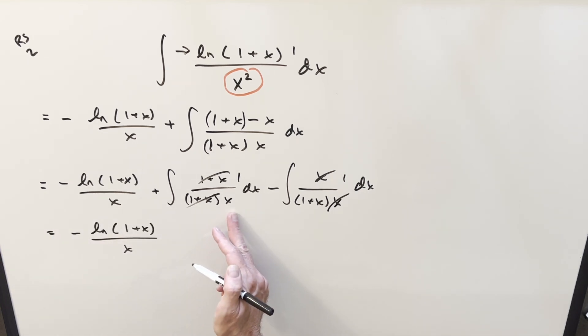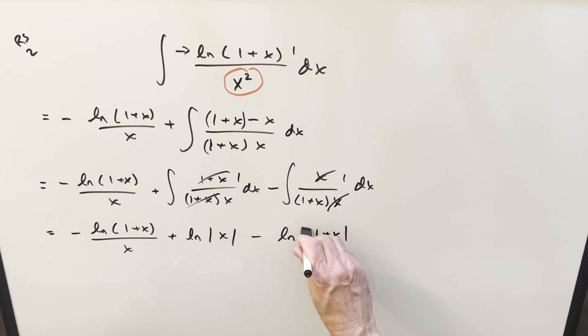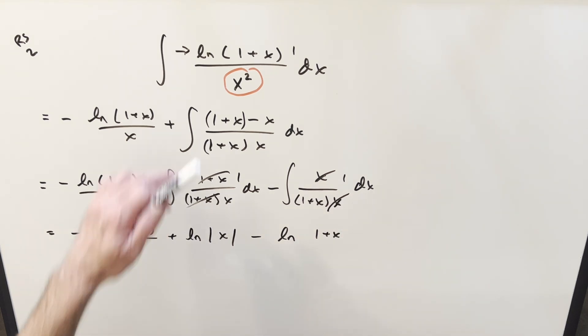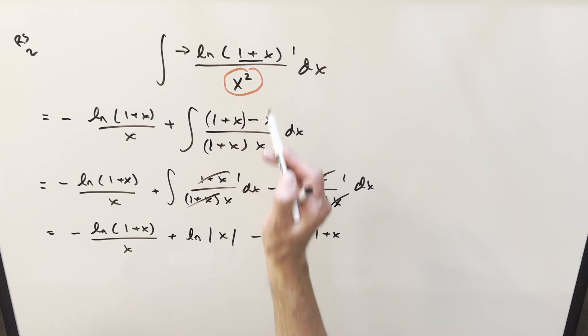This integral here is just one over x. So that's going to be natural log absolute value of x here. Then this one, we're going to have minus natural log absolute value 1 plus x. Now I think if I'm not mistaken, I can drop absolute value here because look at our original problem. In order for this to work in the original problem, this has to be greater than zero. So we drop absolute value here.